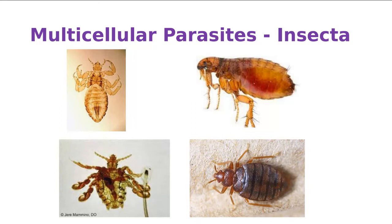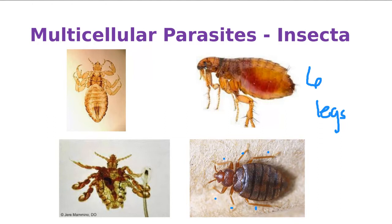You're going to learn something new today. How do we know these are insects? Six legs. That's correct — count them: one, two, three, four, five, six. And the other organism: one, two, three, four, five, six. Six legs — insects.